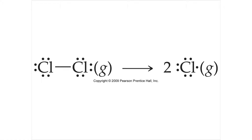Section 8.8: strengths of covalent bonds. If I have a covalent bond between two chlorine molecules and I break them apart into two chlorine atoms, and find out what the heat of formation was, then essentially the energy released by breaking apart these two bonds is the bond enthalpy — the enthalpy required to break the bond.